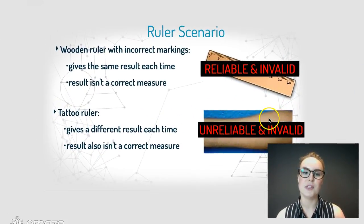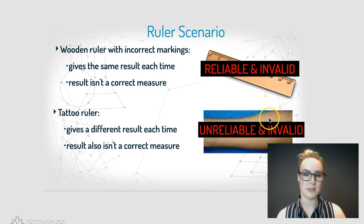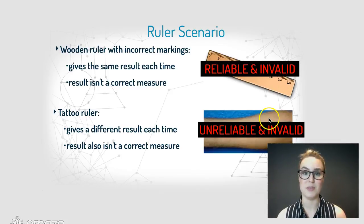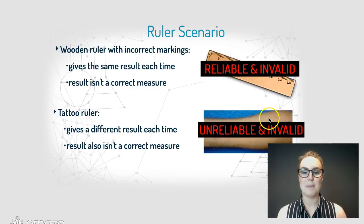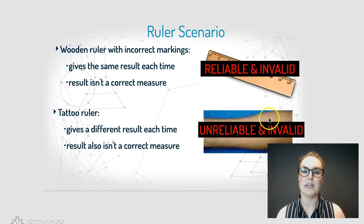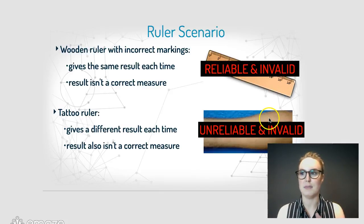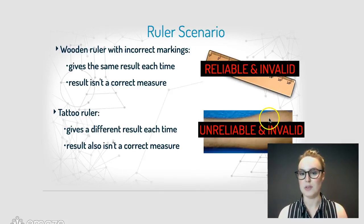The top wooden ruler is reliable because you're getting the exact same result each and every time you use it; however, it's invalid because it's not measuring what it's supposed to measure. The bottom tattoo ruler is unreliable because you are getting a completely different result every time, and it's also invalid because it's not measuring what it's supposed to measure — the way of measuring the length of something with it is just not valid and won't get the results you want.